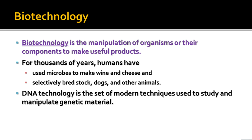First of all, we need to define what biotechnology is. It is the manipulation of organisms or their components to make useful products. You might think biotechnology is a new science, but actually it's not very new. It's been around for thousands of years because people have used various kinds of biological processes to make various products — for instance, using yeast to make wine and cheese, to selectively breed livestock or dogs, or even to cross-pollinate plants. There are lots of different things that fall under the realm of biotechnology that you wouldn't normally think of.